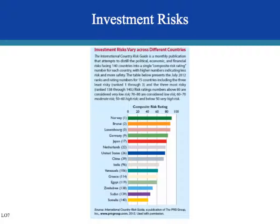The International Country Risk Guide takes into account political, economic, and financial risks of each country. Countries with a higher number are safer and those with a lower number are riskier. Norway scores around 90, so buying a Norwegian government bond is very likely to be repaid, whereas a Somalian bond, scoring below 50, is considered very high risk.